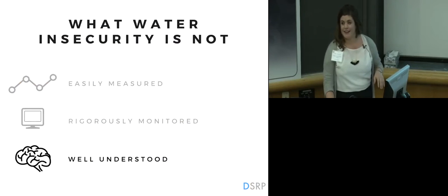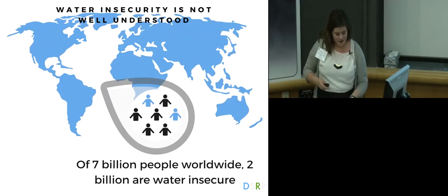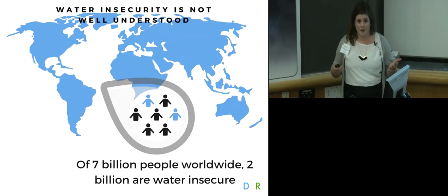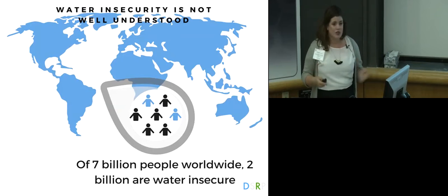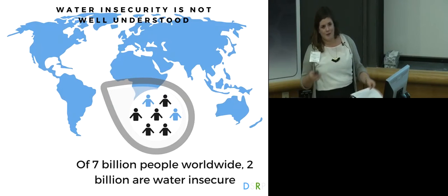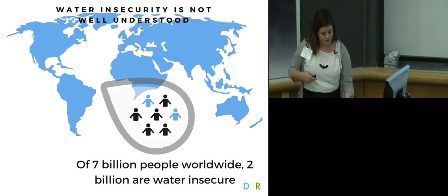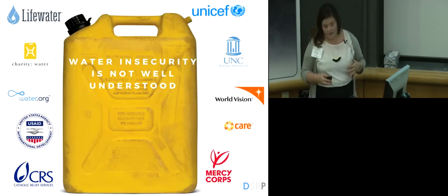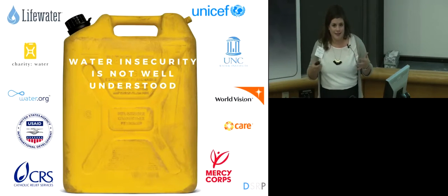And lastly, water insecurity is not well understood — and my research focus is here. We know that water insecurity is a wicked problem: it impacts nearly two billion of the seven billion people worldwide, and likely has consequences that extend across the population, with impacts in nutrition and food security, energy security, and physical and psychological health. The experiences of water insecurity at the individual and household level are largely overlooked, and the response to water insecurity problems becomes siloed into various sectors, each with their own perspectives about what water insecurity is and is not, and solutions on how to solve the problem.